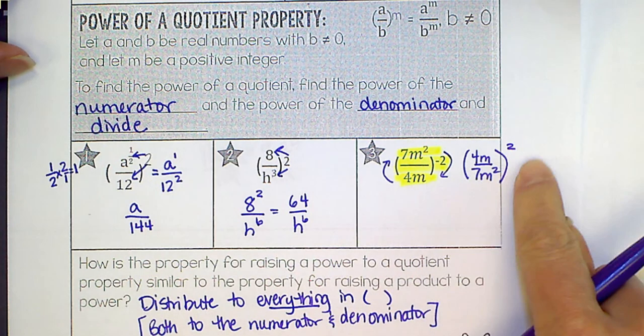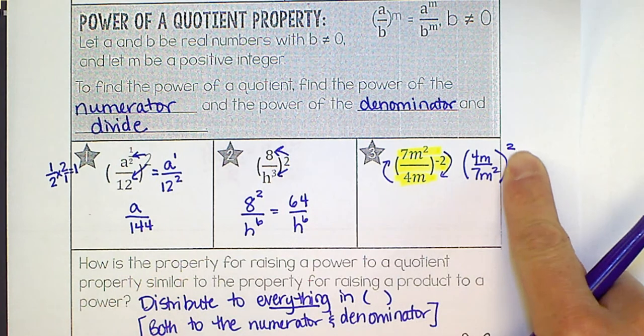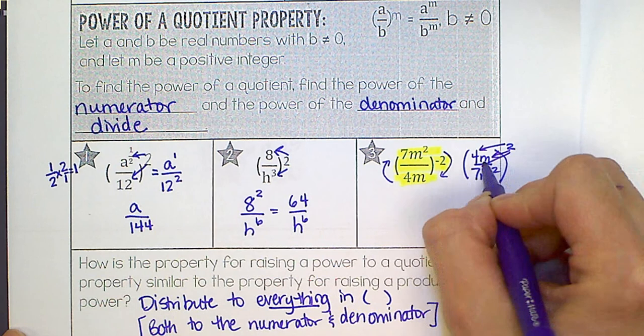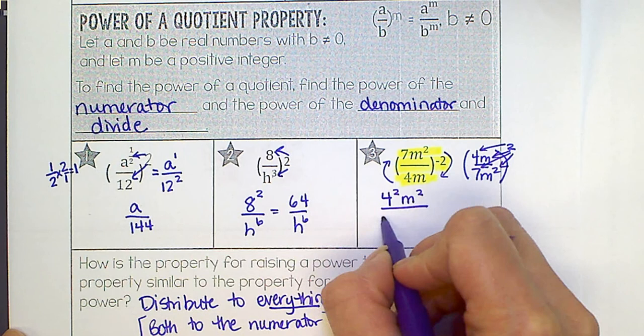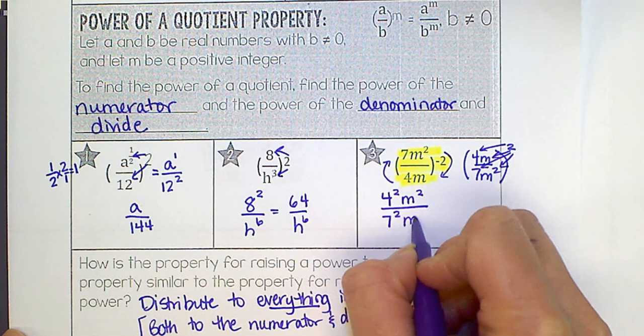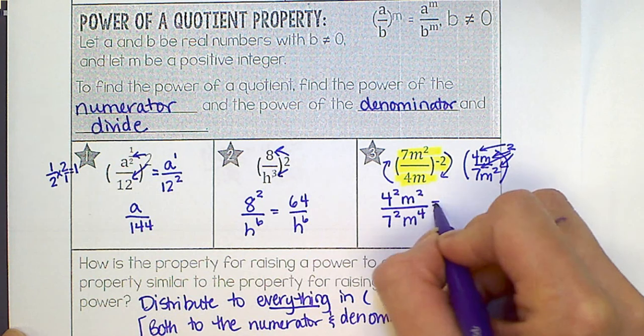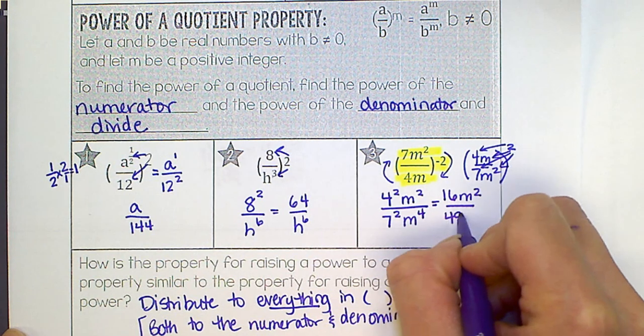If you take the reciprocal, your exponent becomes positive. Now I would distribute that through. So we get 4 squared m squared all over 7 squared m to the 4th, because 2 times 2.